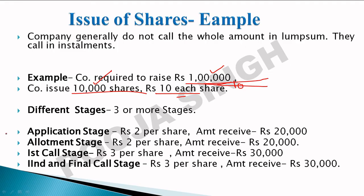Suppose the company decides: application stage — 2 rupees per share; allotment stage — 2 rupees per share; first call — 3 rupees per share; second and final call — 3 rupees per share. This totals 10 rupees per share.